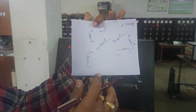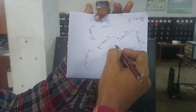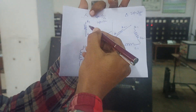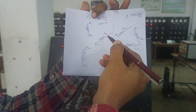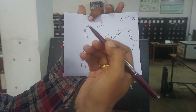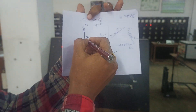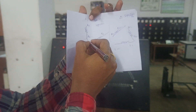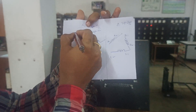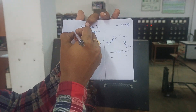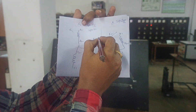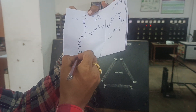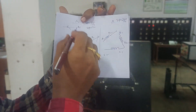I want to connect these three windings in star connection. You see the terminals A1, A2, B1, B2, C1, C2. If you join all second terminals A2, B2, C2, then A1 will act as R phase, B1 will act as Y phase, and C1 will act as B phase.